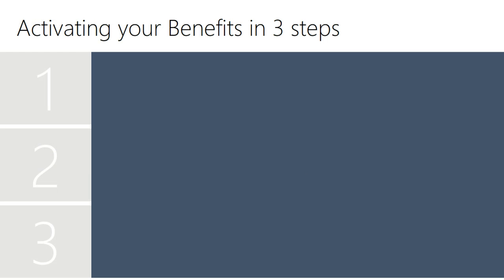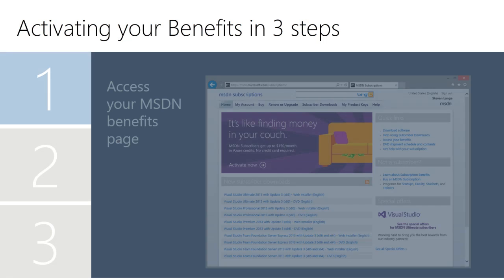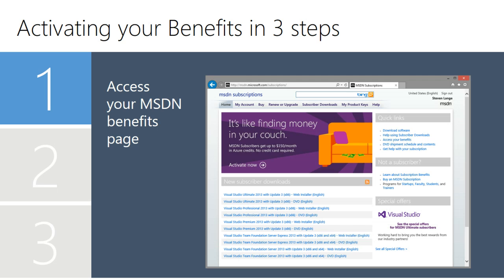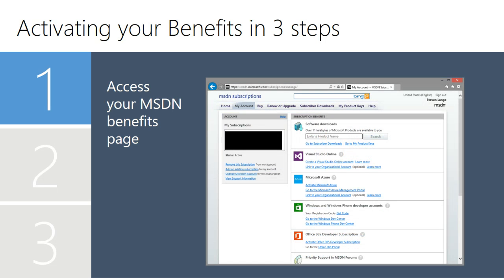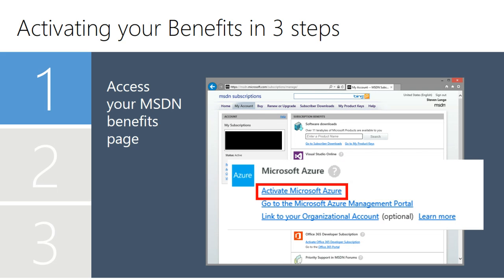Now, keep in mind that these benefits are not enabled by default, but activating them for your MSDN subscription is super easy. First, go to the MSDN subscription site and sign in. On the right, under Quick Links, you'll see access to your benefits. On the benefits page, in the Microsoft section, click Activate Microsoft Azure.